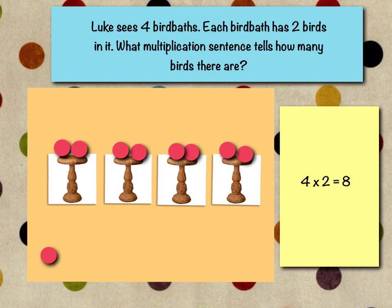Does every bird bath have two birds in it? Yes. Every bird bath has two birds and there are four bird baths. So the multiplication sentence we can use is four times two equals eight, because we have four bird baths times two birds in each bath equals eight.